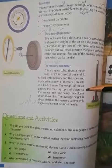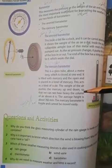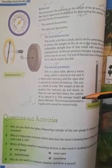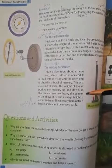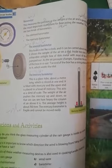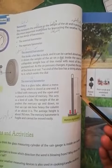The average height is about 760 millimeter. The mercury barometer is fragile and cannot be moved easily. This diagram shows a mercury barometer at 760 millimeter.